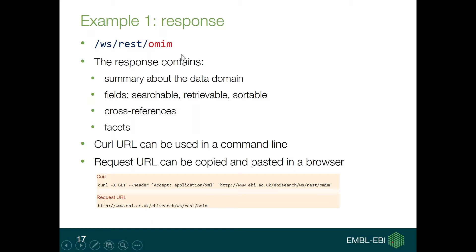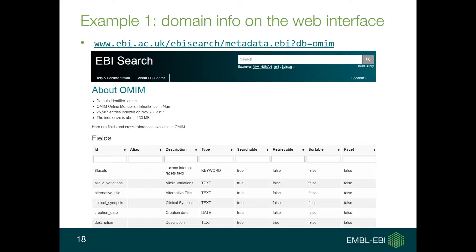As a rule of thumb, for each API available on the EBI Search RESTful API, you can see the curl URL that you can cut and paste into your shell to try the command line, or cut and paste the request URL into a browser to see the results directly on your web page. I won't go through the details of every response — I invite you to look at the web interface, which shows the same content in a more friendly visual way.